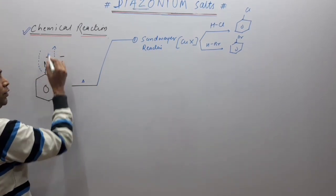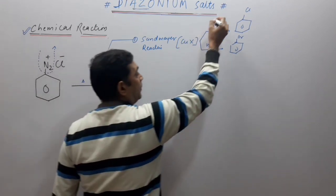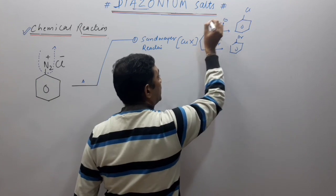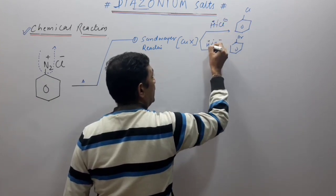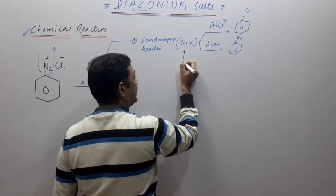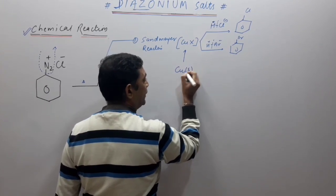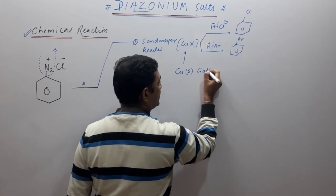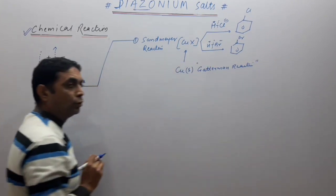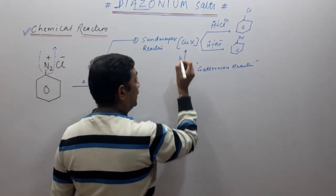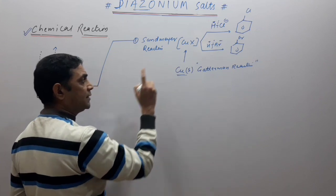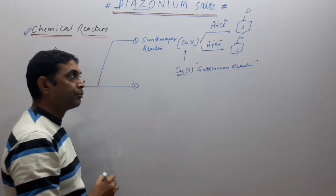In the Sandmeyer reaction, the catalyst used is CuX, where X can be Cl or Br. If you want to make chlorobenzene, use hydrochloric acid with CuCl; if you want bromobenzene, use HBr with CuBr. N2 decomposes, Cl⁻ goes as byproduct, and the halide attaches to benzene, giving chlorobenzene or bromobenzene — forming halo arenes.